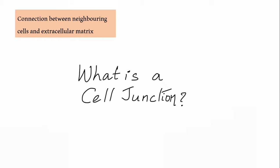A cell junction is the connection between neighboring cells and between the cell and its extracellular matrix. The extracellular matrix is the space or substance seen around the cell. Since this type of junction holds the cell membranes of two adjacent cells, it is also called a membrane junction.